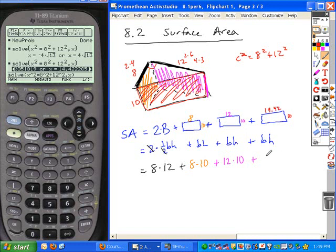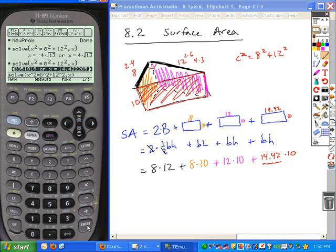Okay, so when I look at all of this, so 14.42 times 10. Okay, now remember, don't use the approximate answer until the very end of your calculation. Okay, so I do want to get this answer into my equation. So if I hit enter to bring it down into my display.